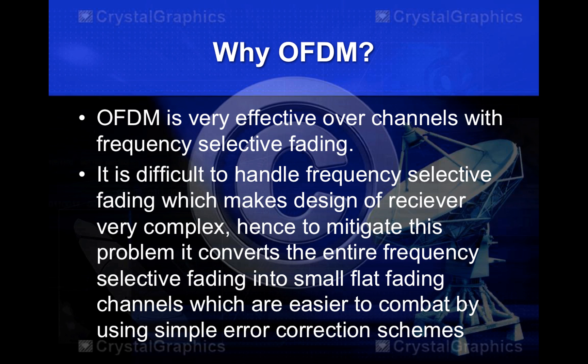To mitigate this problem, OFDM converts the entire frequency selective fading channel into small flat fading channels, which are easier to combat by using simple error correction schemes. Frequency selective fading makes the design of the receiver end very complex, hence OFDM is used to mitigate it.